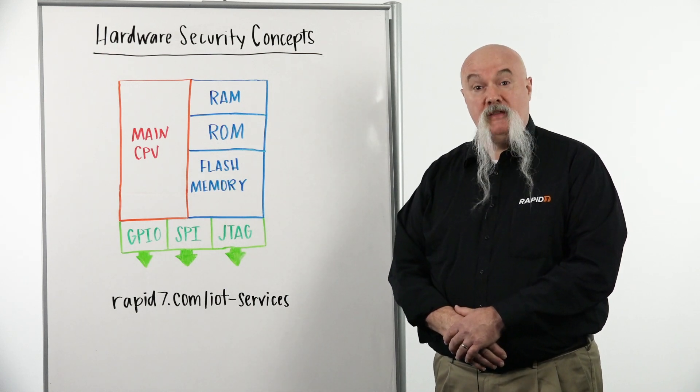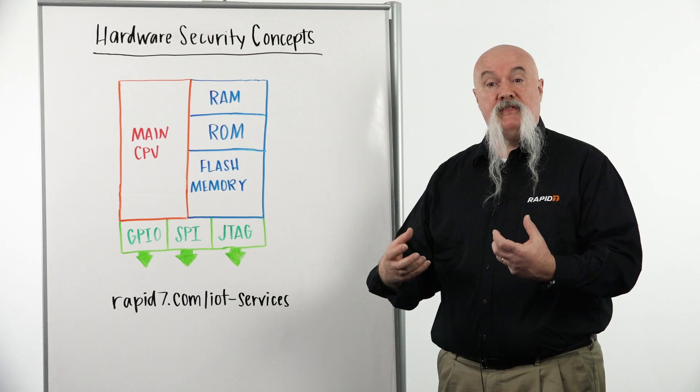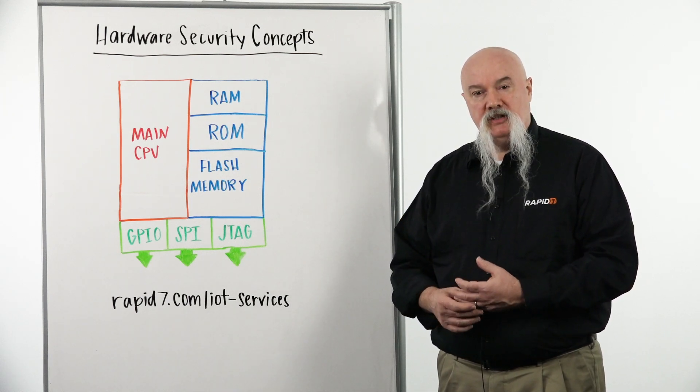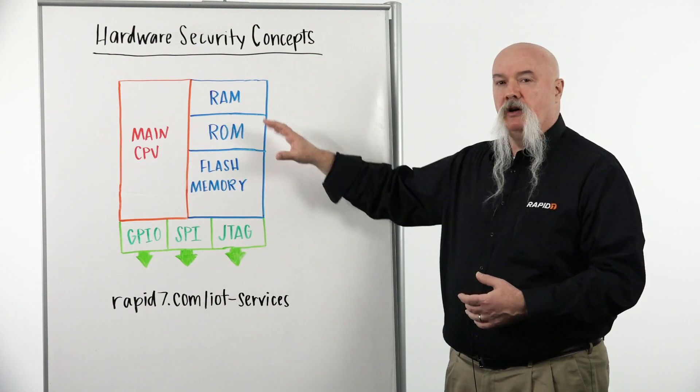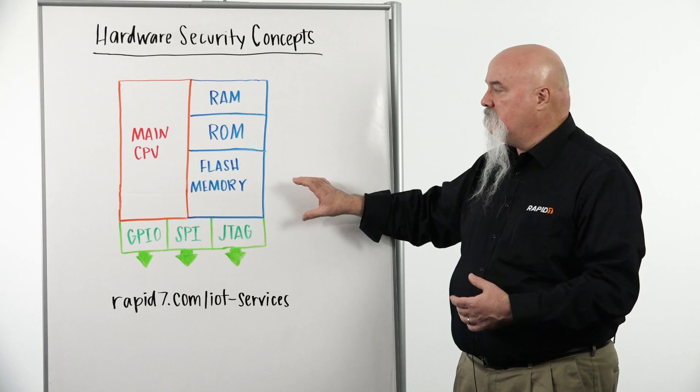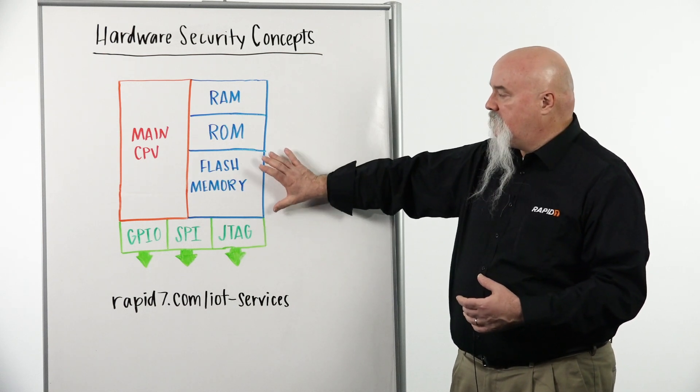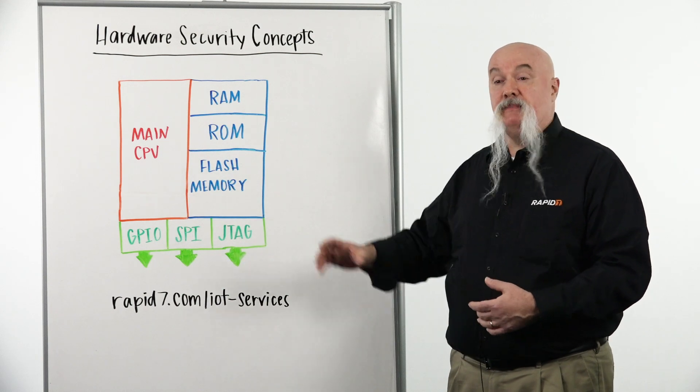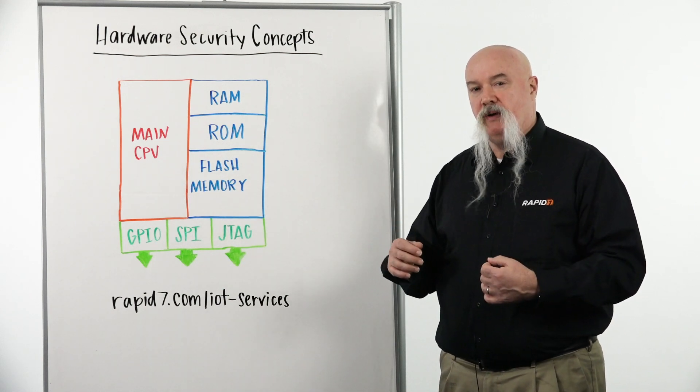And the way this is done is basically with no readback bits being set on the technology. What does that mean? What it means is these devices can actually have a bit set on them to make it so that the attacker cannot get access to the flash memory. He may be able to write to it, but he will not be able to read this back.